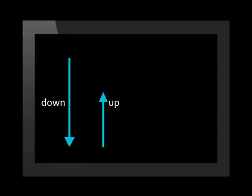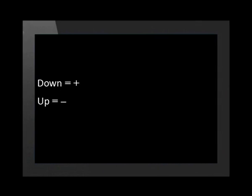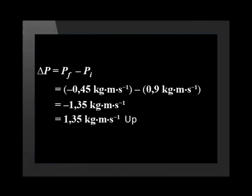Notice the up vector is shorter than the down vector. Now let's look at what happens to the momentum of the tennis ball — the momentum changes during this bounce. The change in momentum equals the final momentum minus the initial momentum. Remember, we chose downwards as the positive direction, so the final momentum has a negative number. Delta p equals negative 0.45 minus positive 0.9 kilogram meters per second, which works out as negative 1.35 kilogram meters per second — that is 1.35 kilogram meters per second upward.